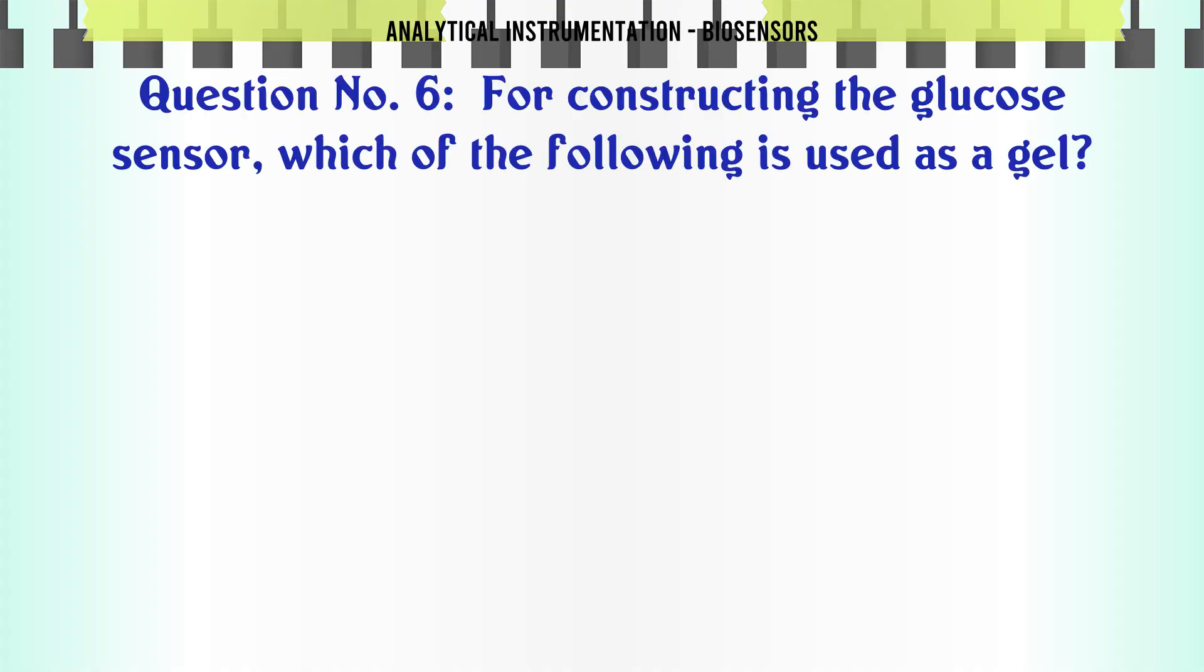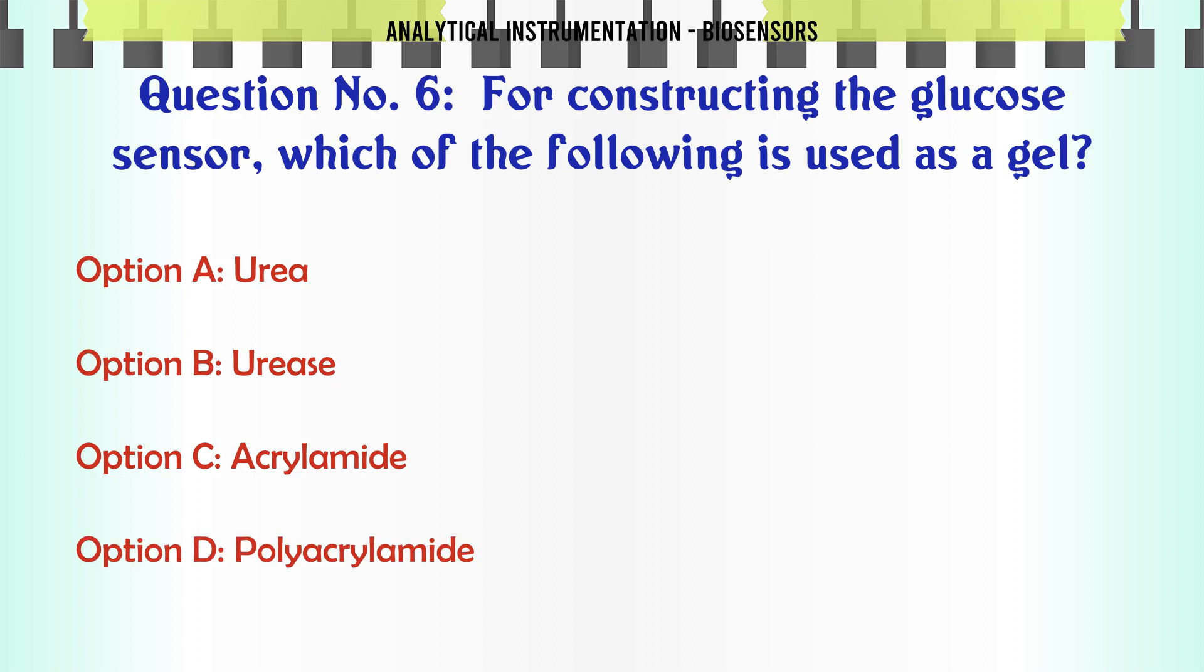For constructing the glucose sensor, which of the following is used as a gel? Option A: Urea. Option B: Urease. Option C: Acrylamide. Option D: Polyacrylamide.